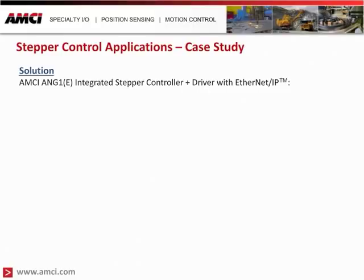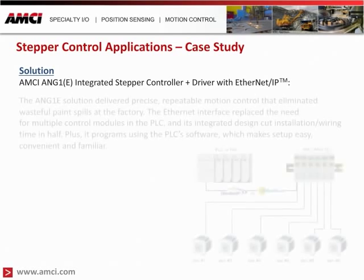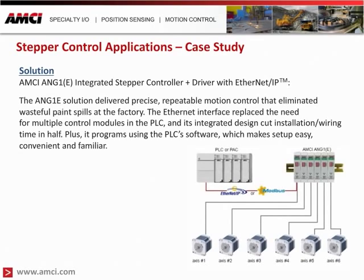The best solution for this application was the AMCI ANG1E DC-powered integrated drive controller. It delivered precise, repeatable motion control that eliminated wasteful paint spills at the factory. The product's Ethernet interface replaced the need for multiple control modules in the PLC, and its integrated design cut installation and wiring time in half. Plus, it programs using the PLC software, which makes setup and changeover easy, convenient, and familiar.